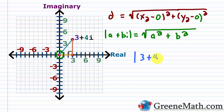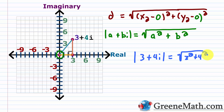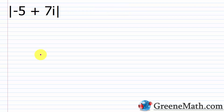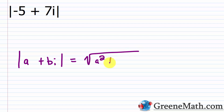We already found that the absolute value of 3 plus 4i was just the square root of 3 squared plus 4 squared. 3 squared is 9, 4 squared is 16, so the absolute value is the square root of 25, which is 5. It's very easy once you have this formula, but I wanted you to see where it came from. It's worth spending 10 or 15 minutes understanding the derivation so that if you're asked to explain it, you're able to do so. The absolute value of a plus bi equals the square root of a squared — the real part squared — plus b squared, the imaginary part squared.